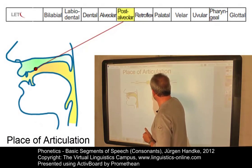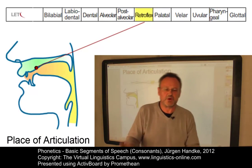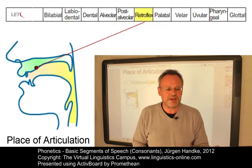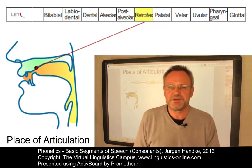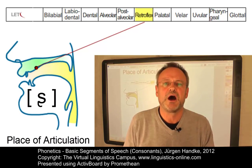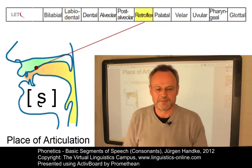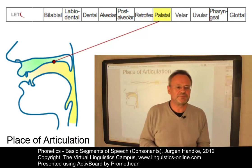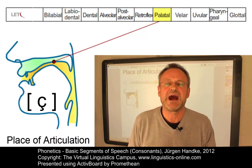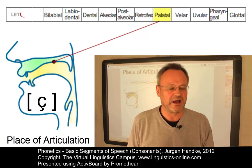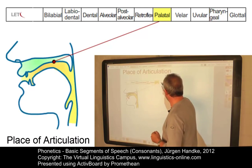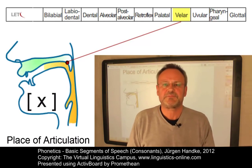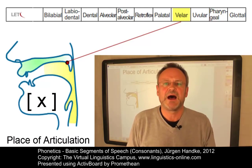The retroflex place of articulation is post-alveolar, but the tip of the tongue is slightly curled back, producing a sound like a-fa. If we have a narrowing in the palatal region, we get a palatal consonant like a-fa. The velar place of articulation involves a constriction between the velum and the tongue, producing a sound like a-fa.